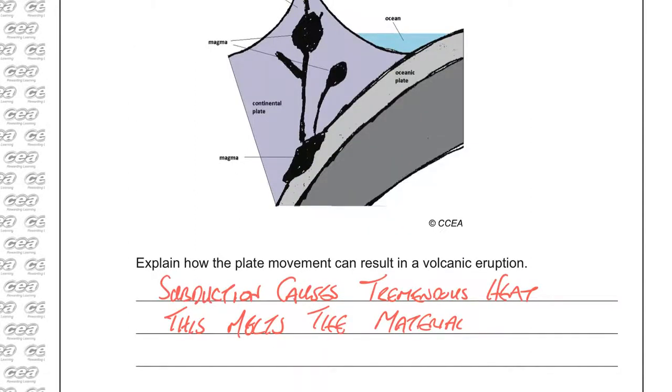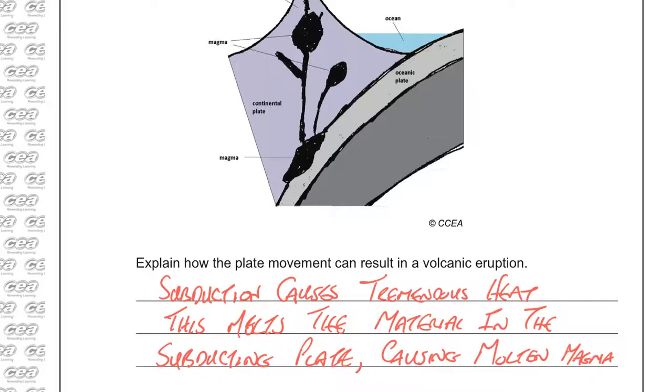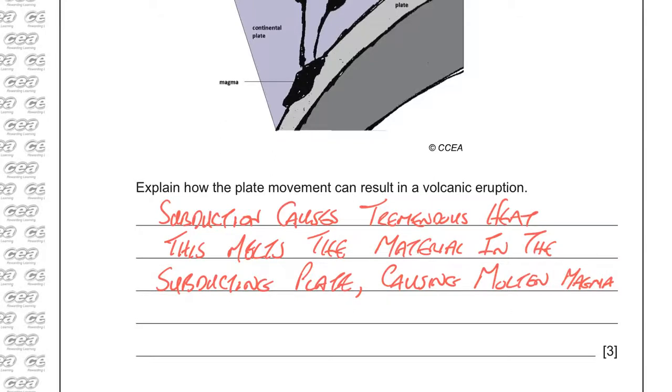So, the subduction causes tremendous heat and this melts the material of the subducting plate. And that causes tremendous amounts of heat and pressure. So, what we also get is pressure because of the heat.